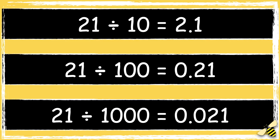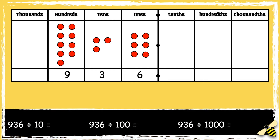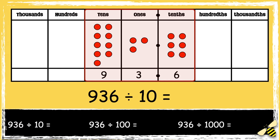Now let's look at an example of dividing a three-digit number by 10, 100, and 1000. Here is the number 936. First, we're going to divide the number by 10. When we divide numbers by 10, the digits move one space to the right. So 936 becomes 93.6.